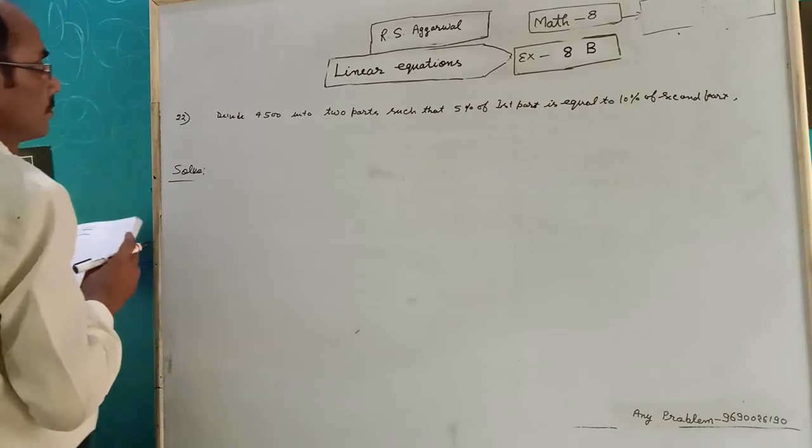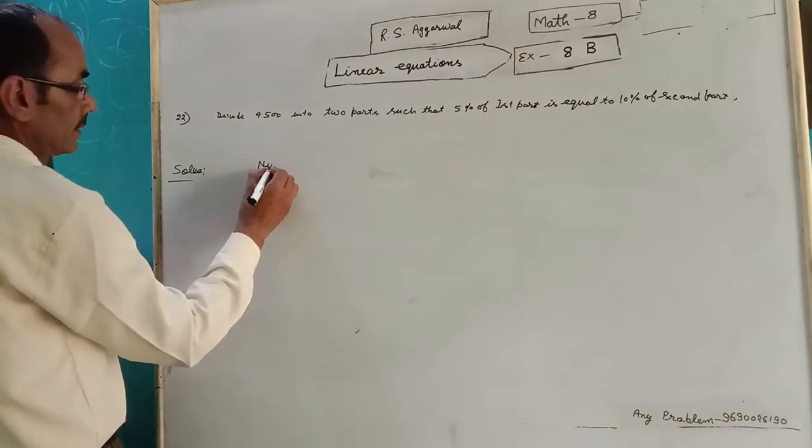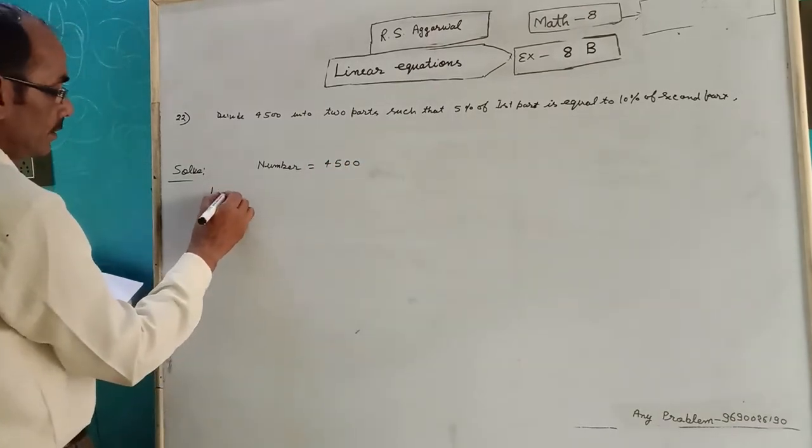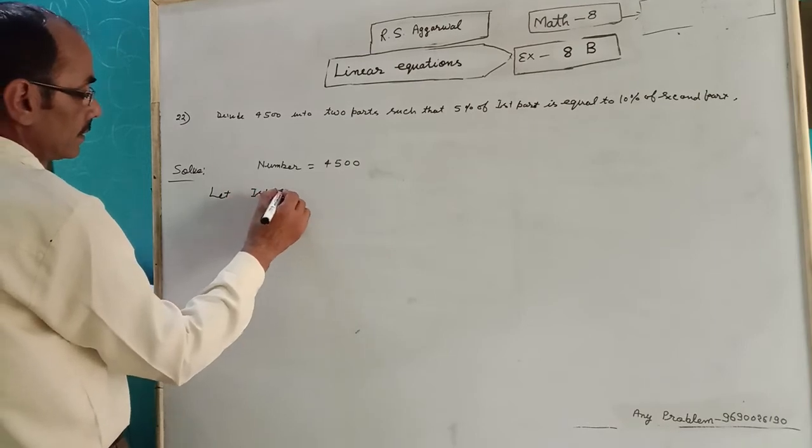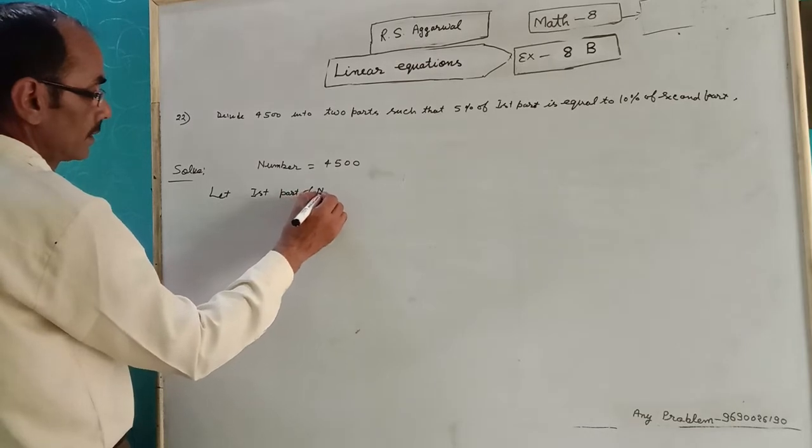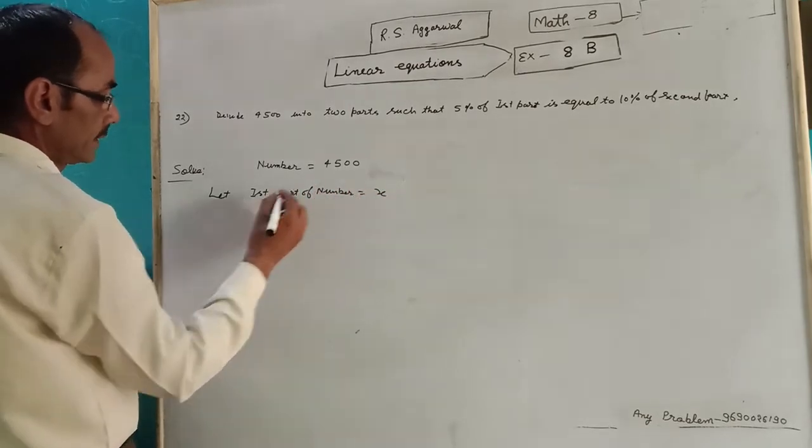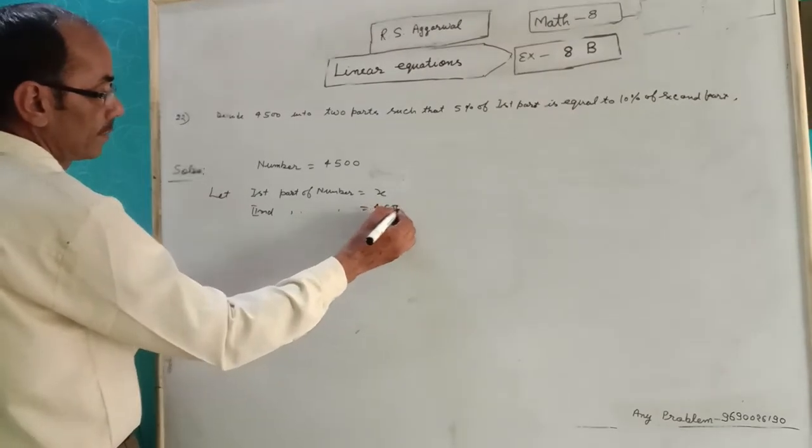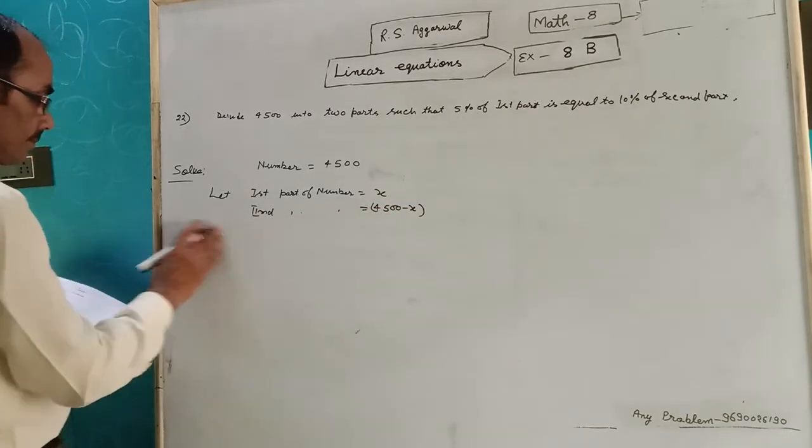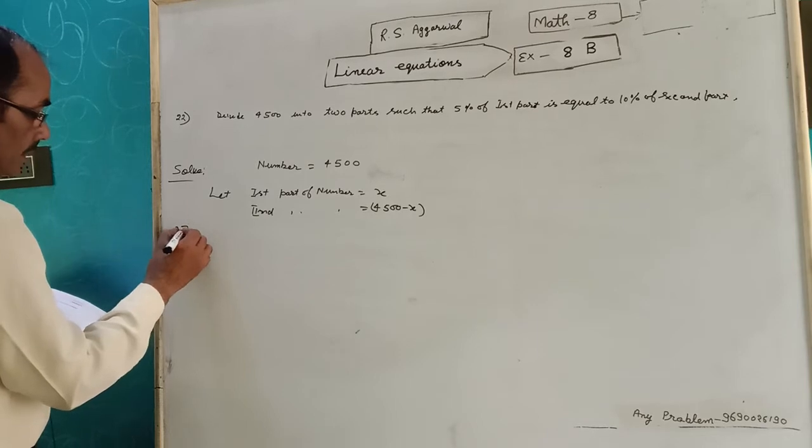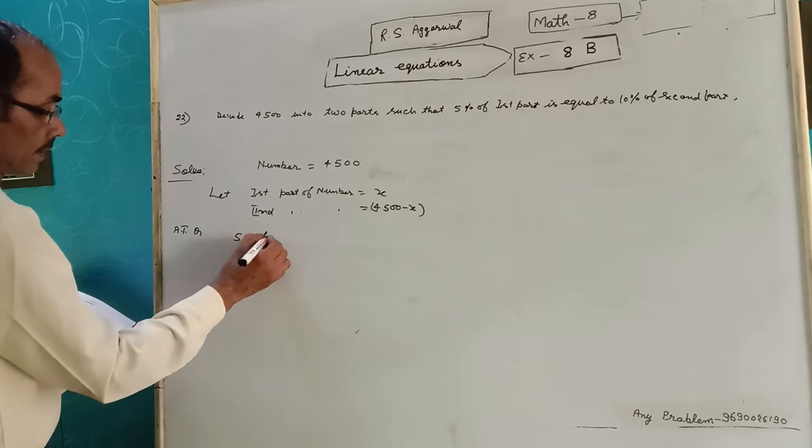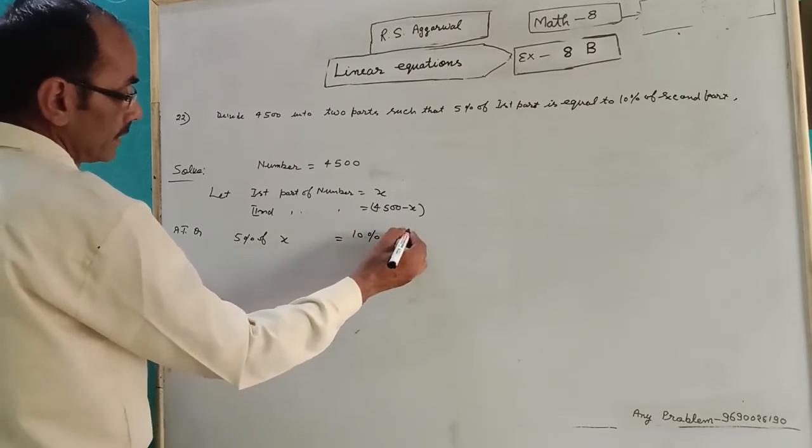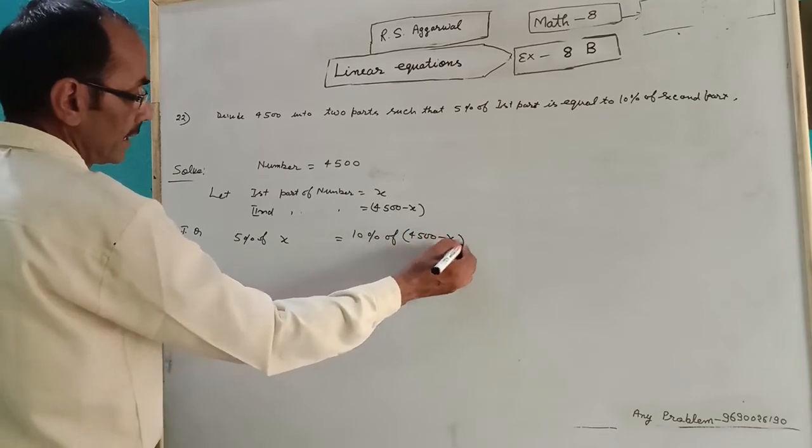How to solve. Number is 4500. Let the first part of the number be equal to x. Second part will be 4500 minus x. According to question, 5% of first part equal to 10% of second part.